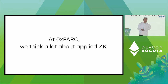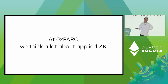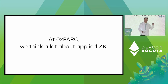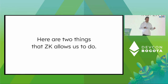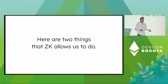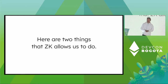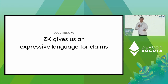One of our largest areas of focus at 0xPARC is applied ZK cryptography — understanding what is possible to do with ZK crypto, what theoretically should be possible with decentralized apps, and what we need to do to bring those tools to production. Applied ZK is one of a category of relatively newer cryptographic primitives that we categorize under the term programmable cryptography. To explain why programmable cryptography is important, I want to go into why applied ZK is especially important.